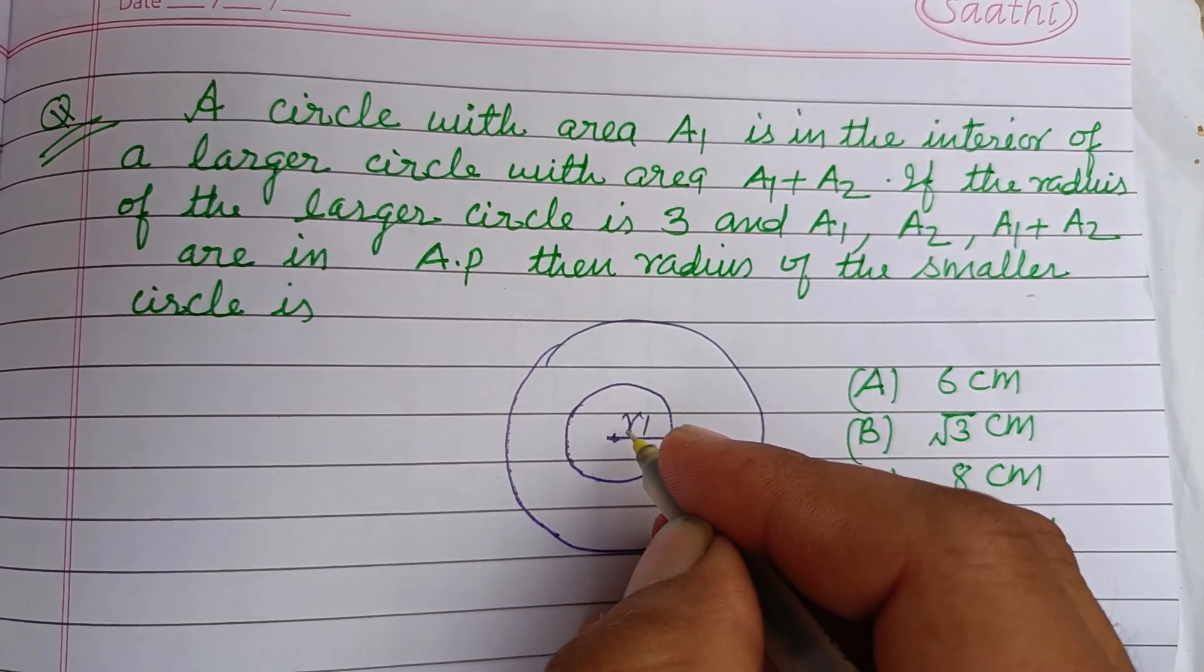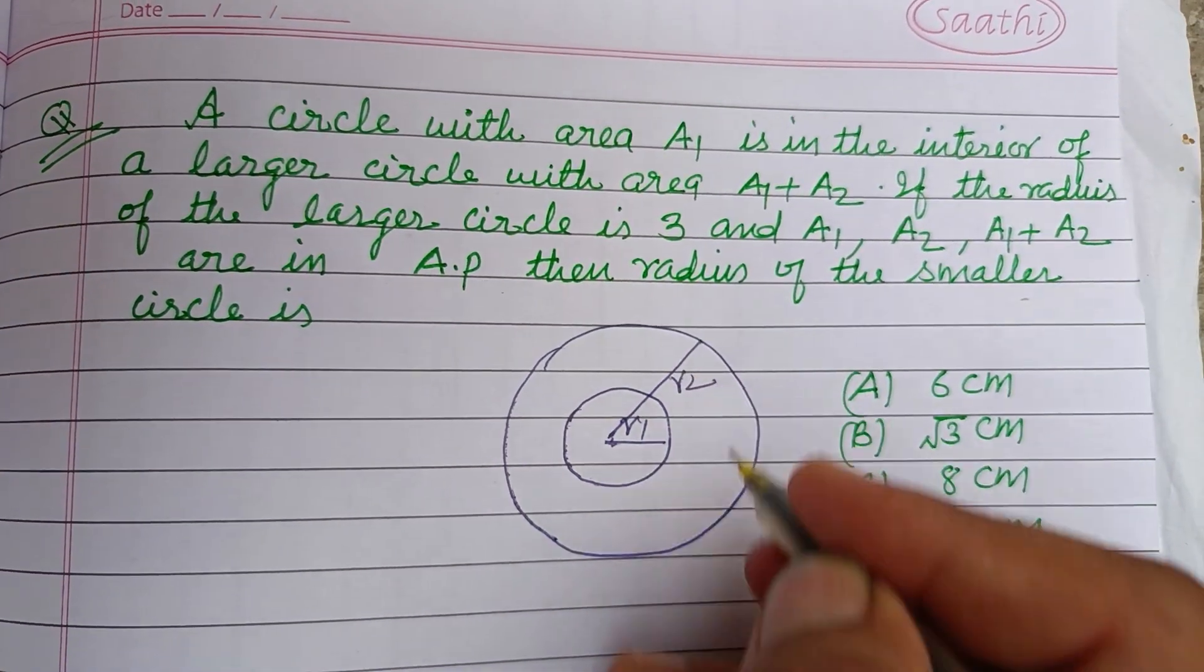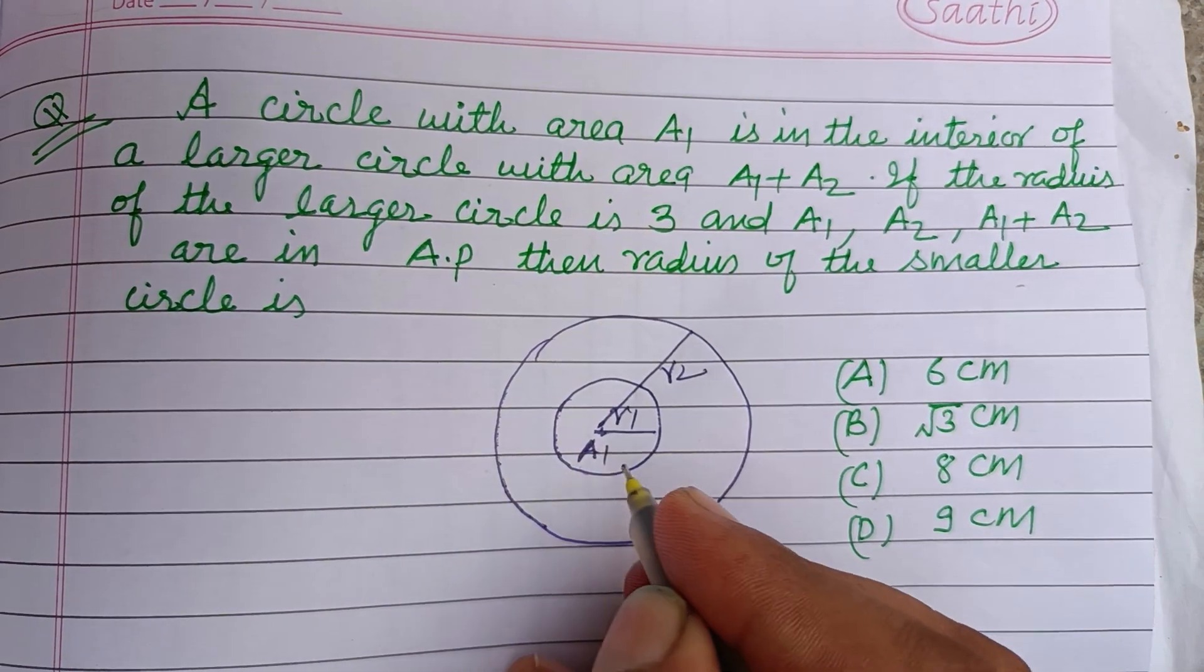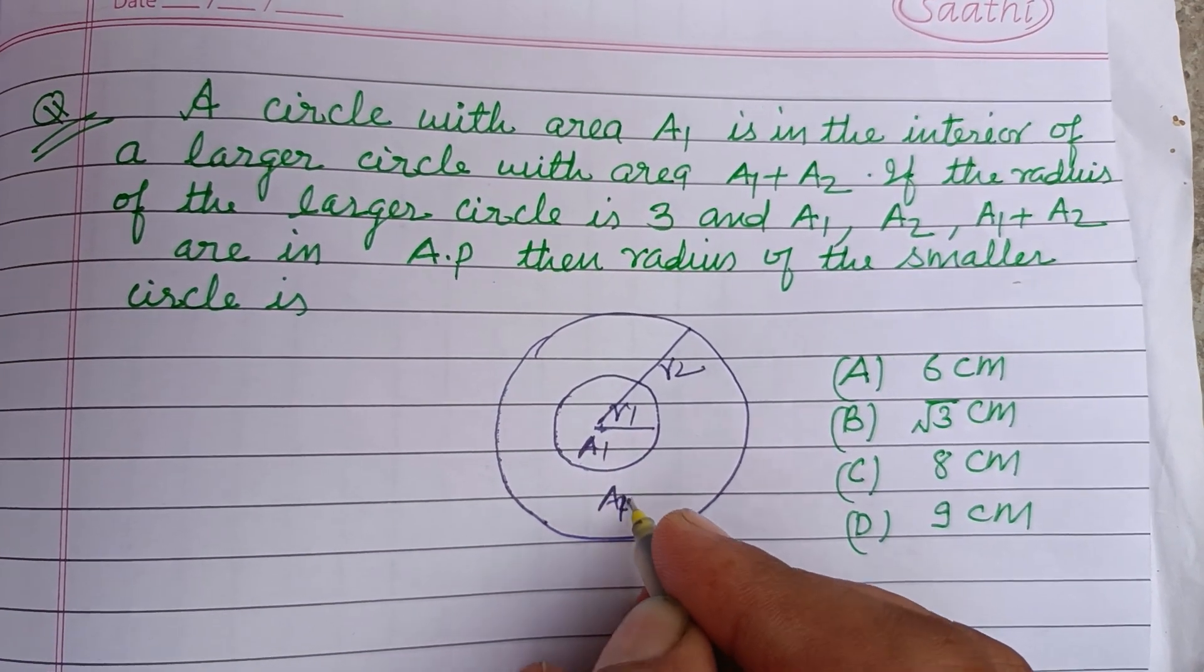Let its radius be r1 and the larger radius be r2. The area of the smaller circle is A1 and the area of the larger circle is A1 plus A2.